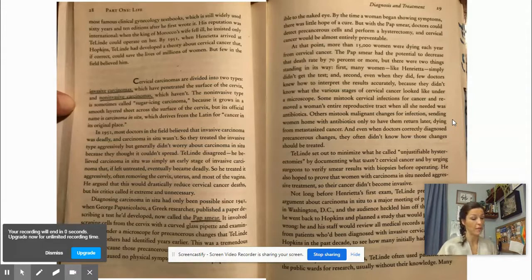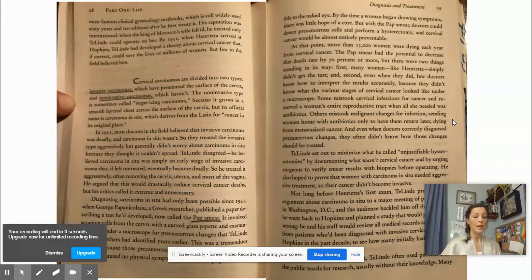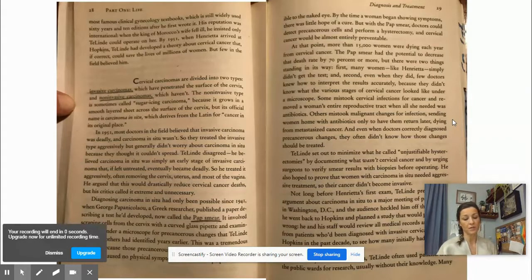Cervical carcinomas are divided into two types: invasive carcinomas, which have penetrated the surface of the cervix, and non-invasive carcinomas, which haven't. The non-invasive type is sometimes called sugar icing carcinoma because it grows in a smooth layer sheet across the cervix. But its original name is carcinoma in situ, which derives from the Latin for cancer in its original place. In 1951, most doctors believed invasive carcinoma was deadly but didn't worry about carcinoma in situ. Talinde disagreed. He believed carcinoma in situ was simply early stage invasive carcinoma that, if left untreated, eventually became deadly.